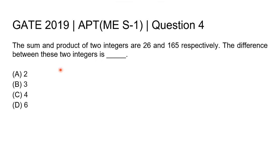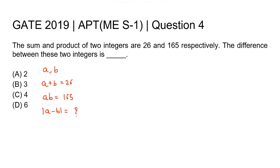Now let us get back to the question. Let us assume that these two integers are a and b. We have been given that the sum of these two is 26, so a + b = 26. It is also given that the product of these two is 165, so a × b = 165. What we need to find is the difference |a - b|, since we don't know which one is larger.